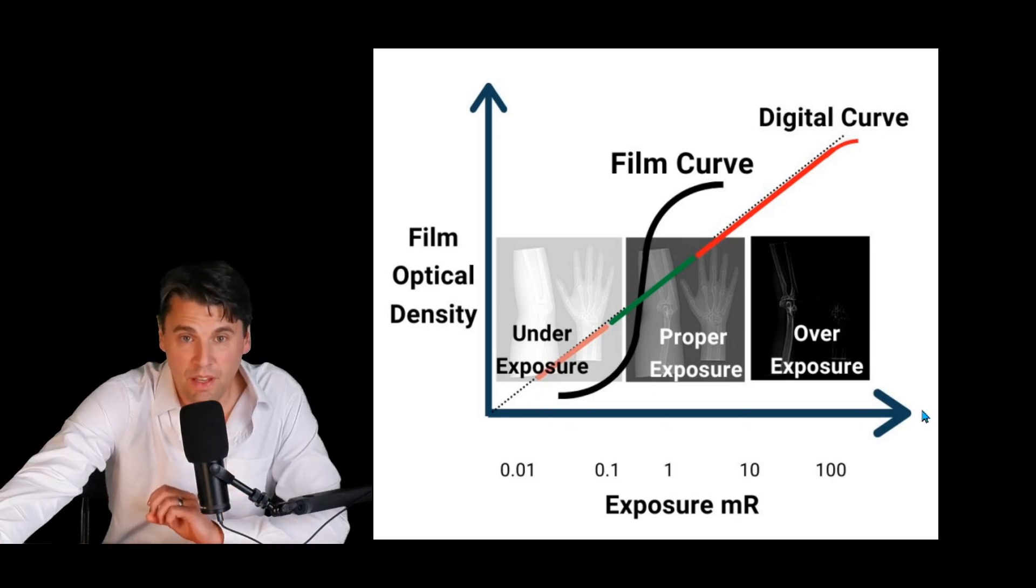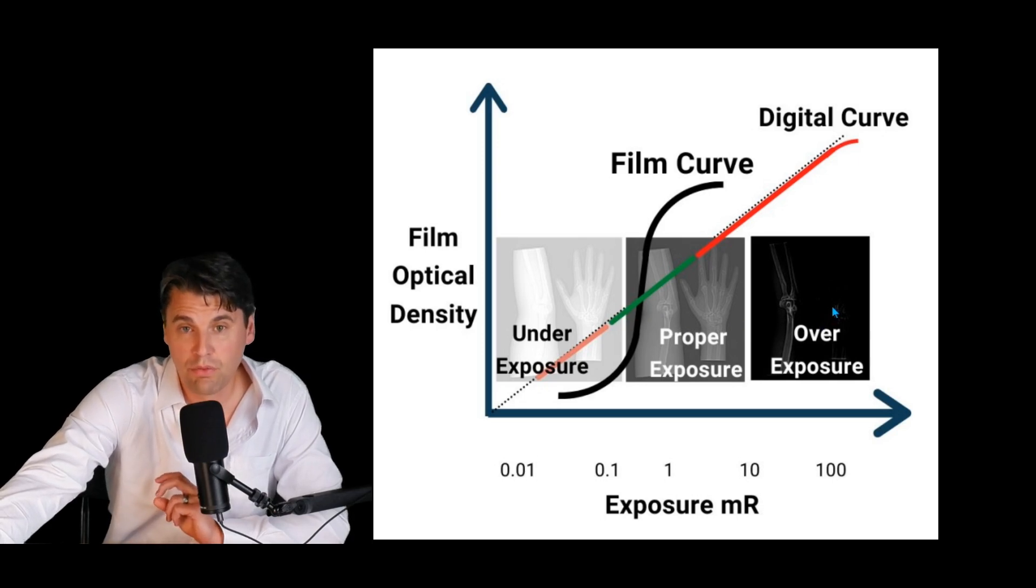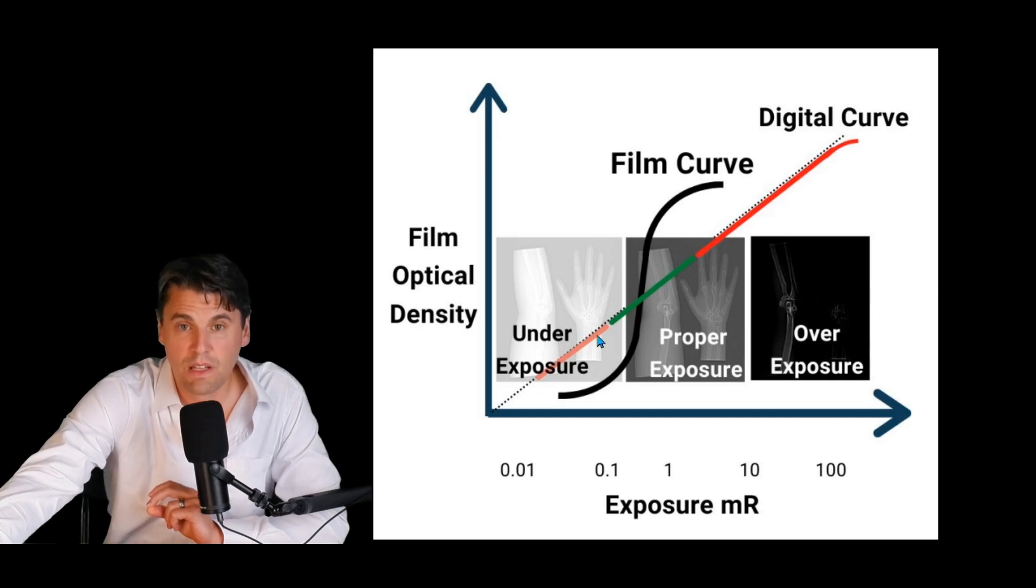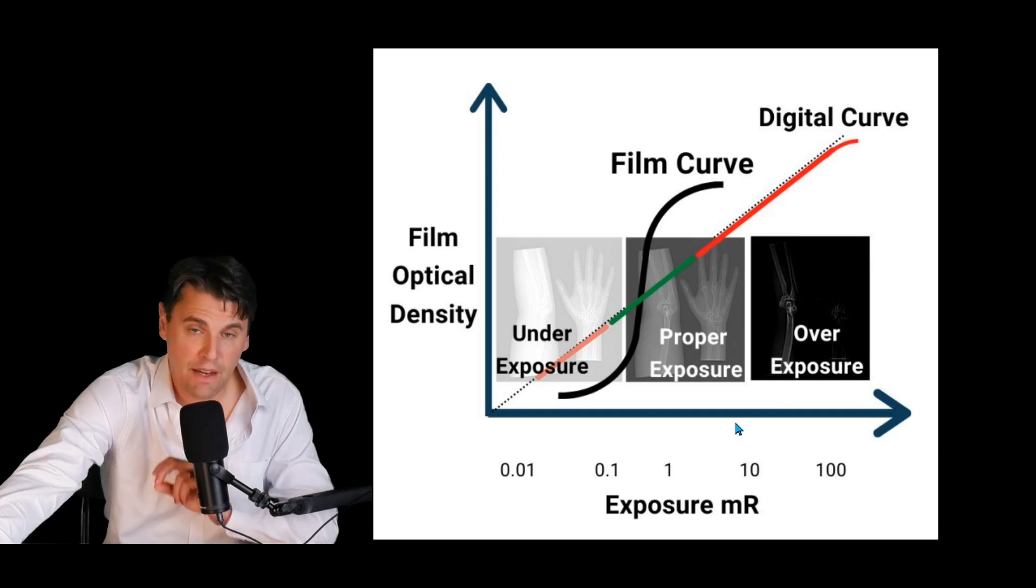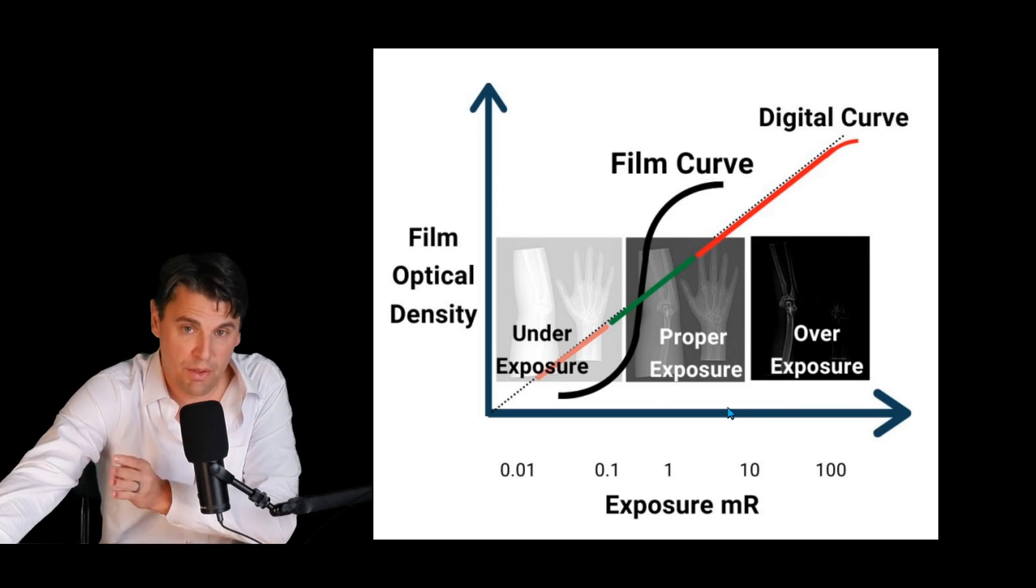On your film, if you think about the dose on this direction, there's a kind of a sweet spot here in the middle. This was called an S-curve because it looks like an S-shape here, and if you're in the middle, your film is going to be properly exposed. If you have too much radiation, your film is going to be too dark. Too little radiation, your film is going to be too bright.